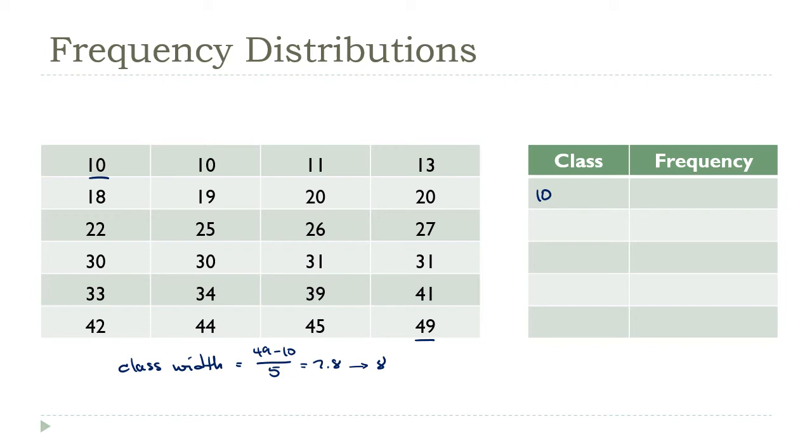And then, let's see, that's going to make the remaining lower class limits. So I'm going to add the class width. I'm going to add 8 over and over again. That'll be 18, 26, 34, and 18, 26, 34, and 42.